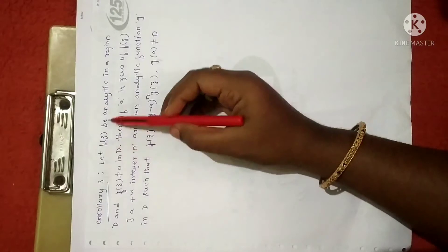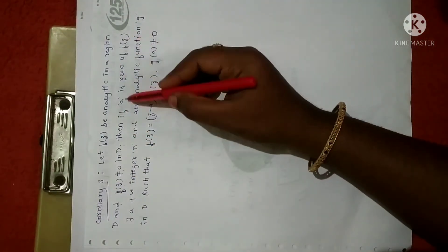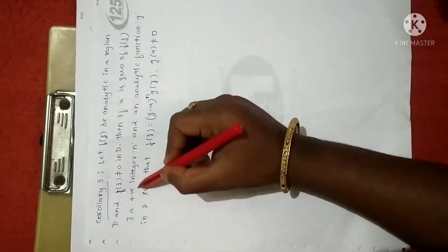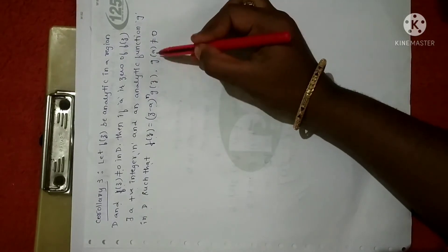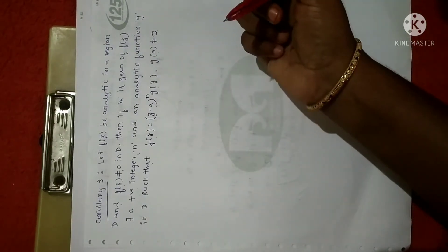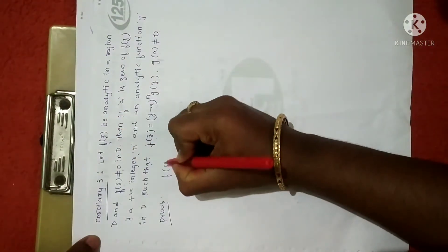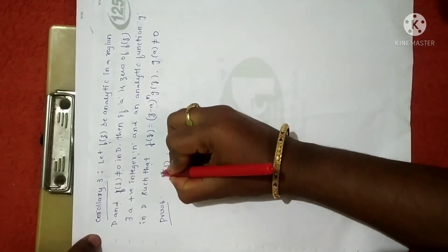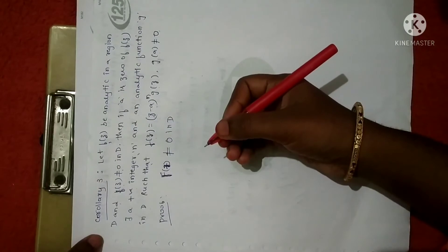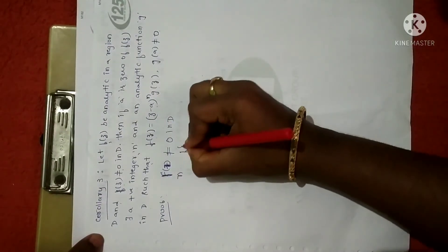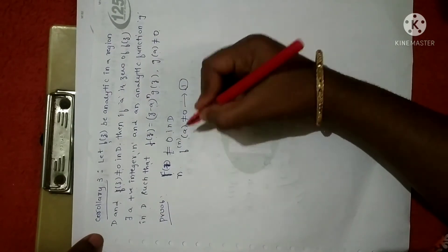Here is the third corollary. If f(z) is analytical in a region D, f(z) is not identically 0 in D, and A is a zero of f(z) — meaning f(A) = 0 — then there exists a positive integer N and an analytical function g in D such that f(z) = (z - A)^N · g(z), where g(A) ≠ 0. We can prove this using Taylor series expansion. By the principle of analytical continuation, since f(z) is not identically 0, there exists a positive integer N such that f^N(A) ≠ 0.